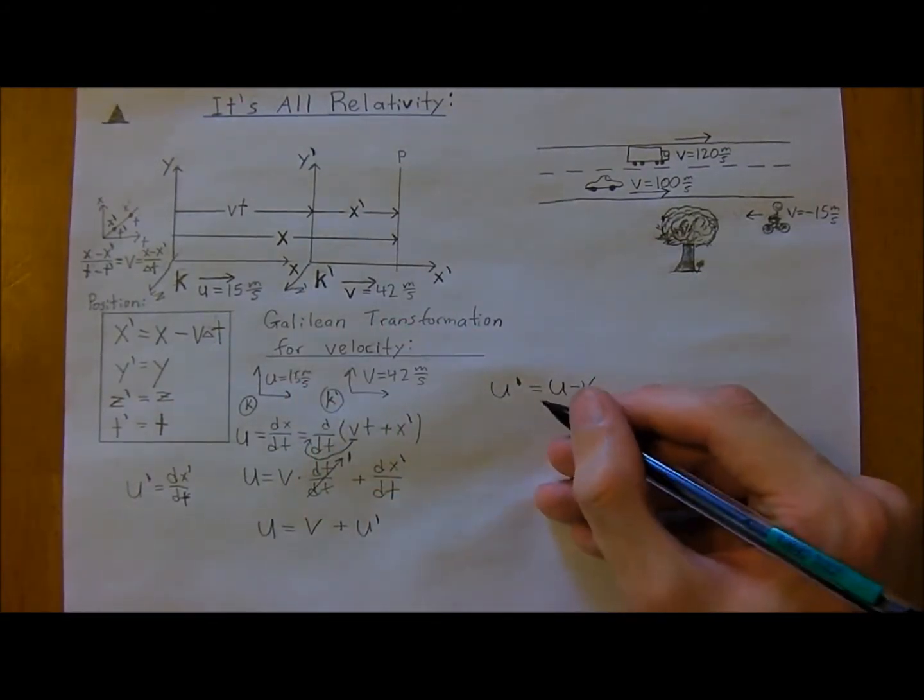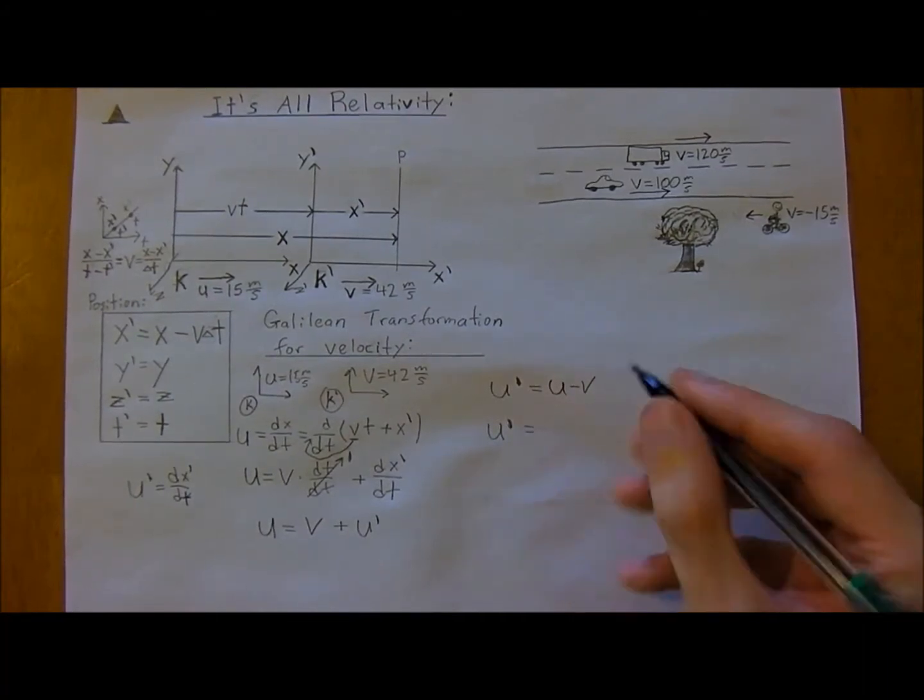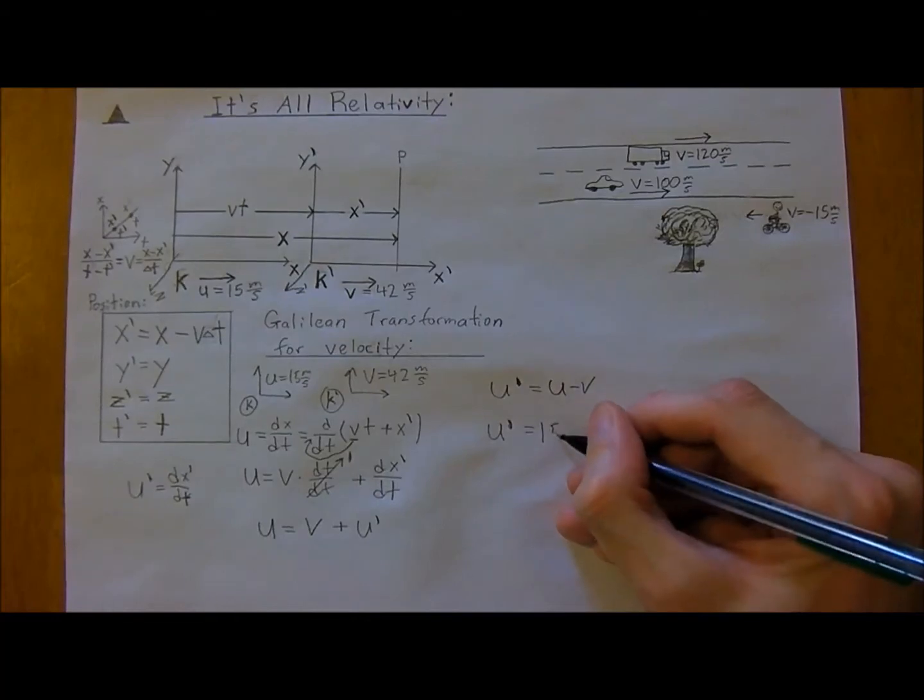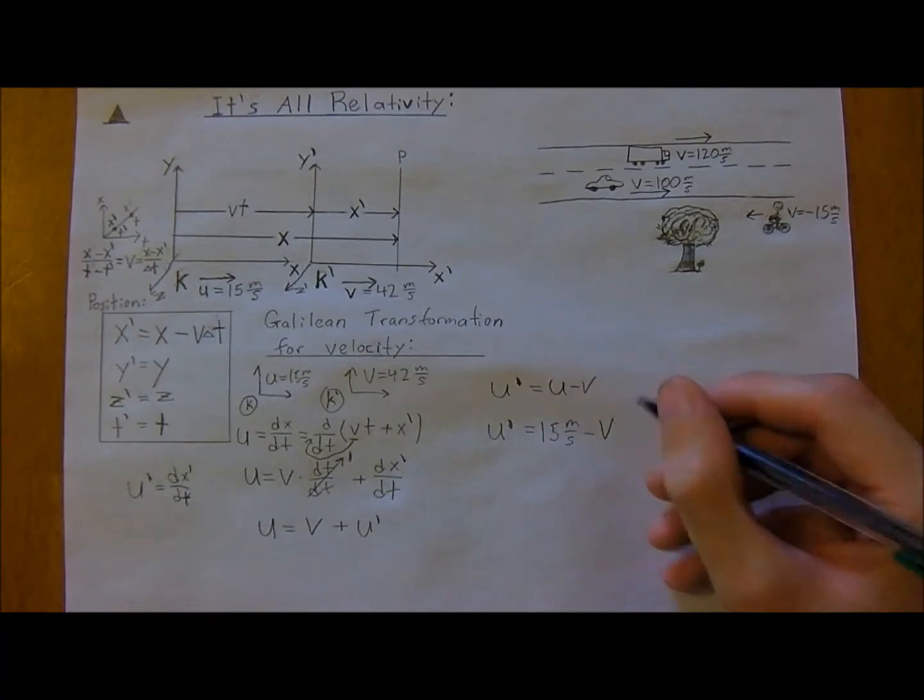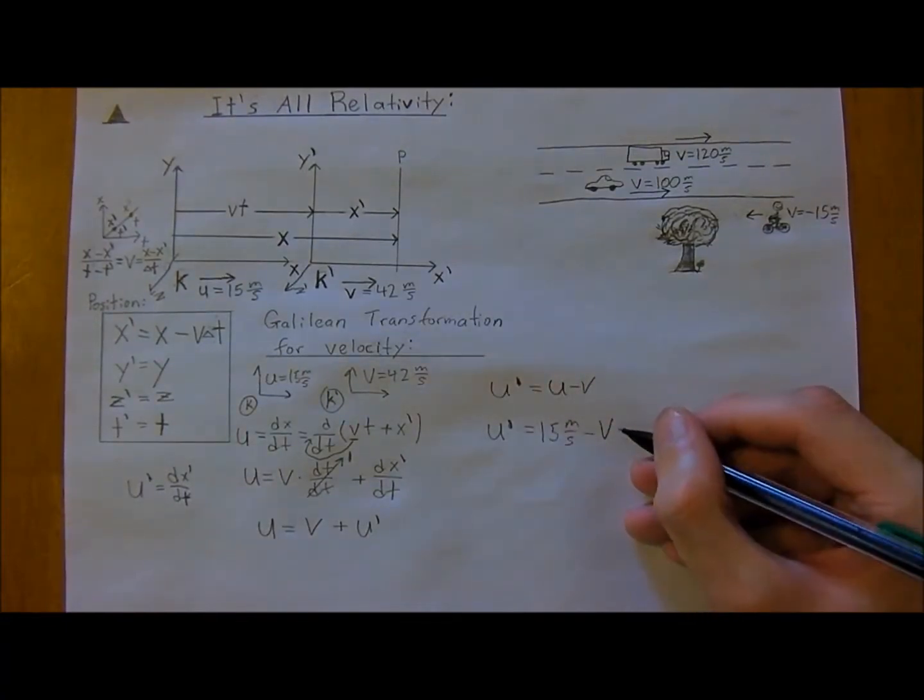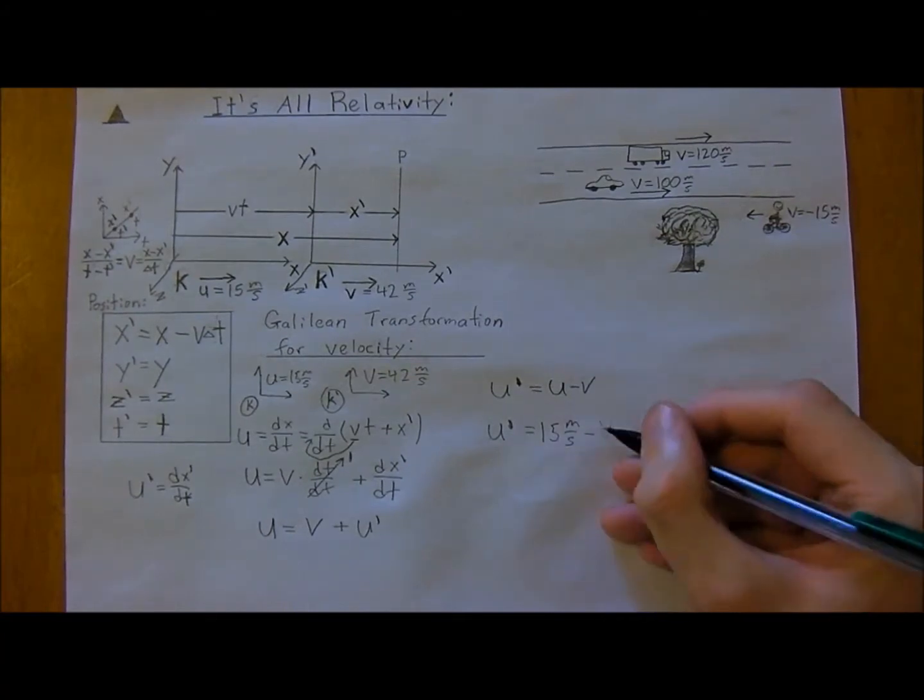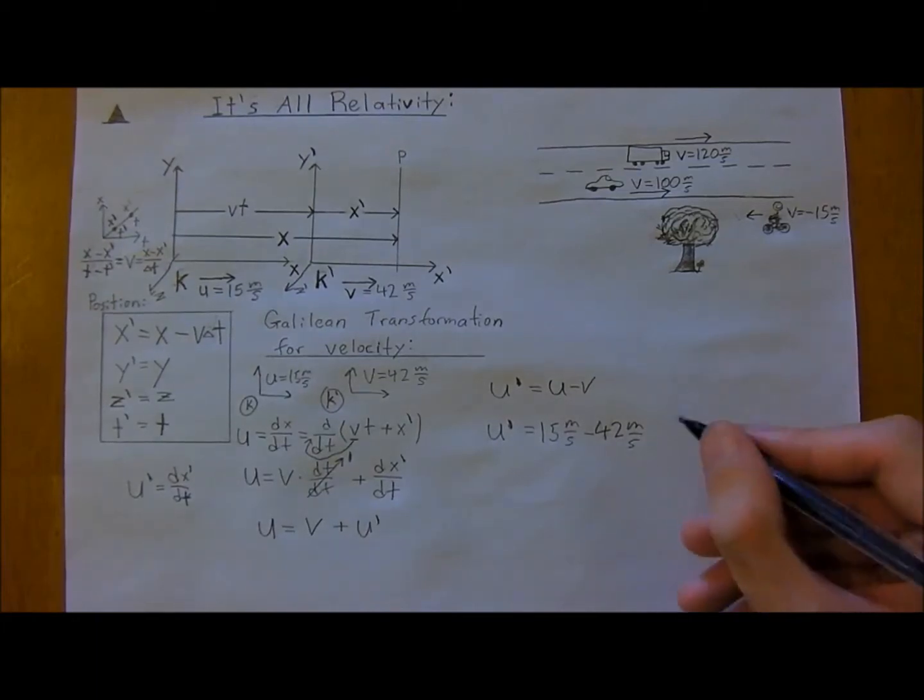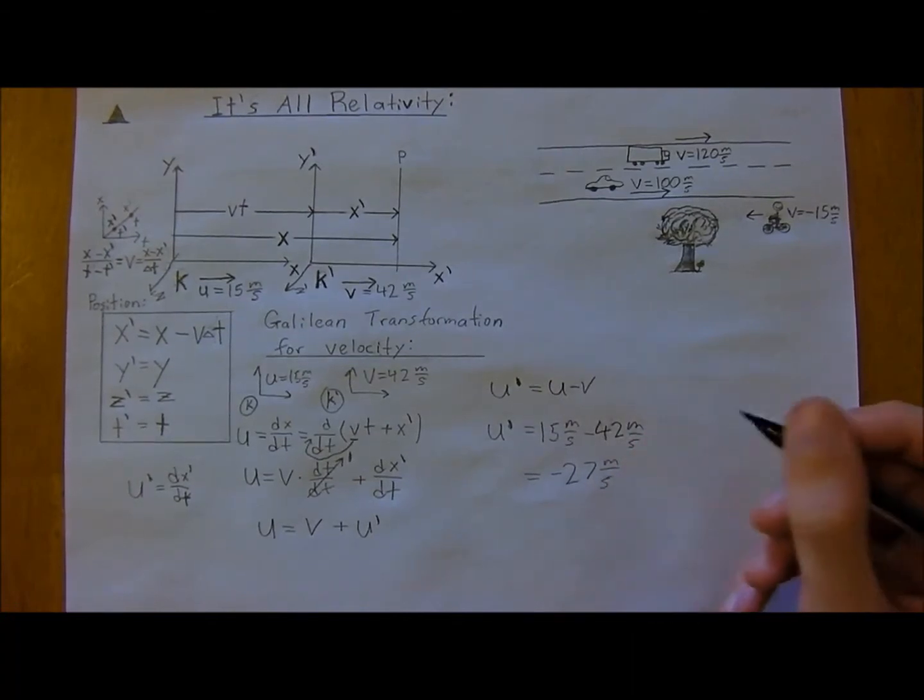So then u-naught is u minus v, then in u-naught's frame of reference, u is 15 meters per second minus v, and v is 42, I always do that when I'm talking, okay, 42 meters per second, and this of course is equal to negative 27 meters per second.